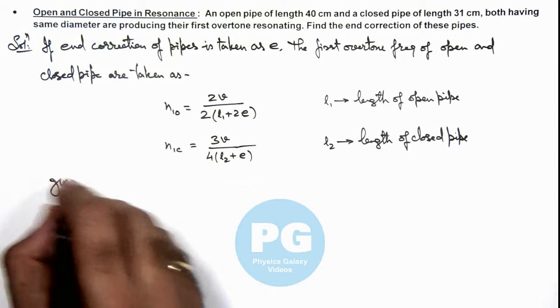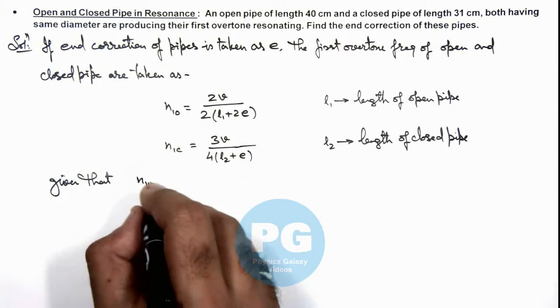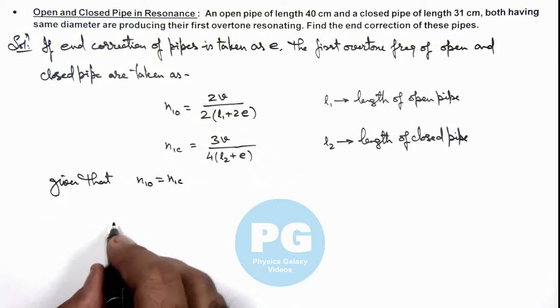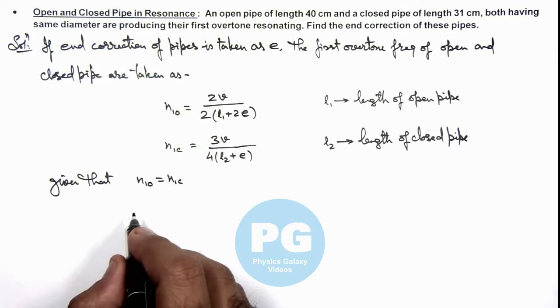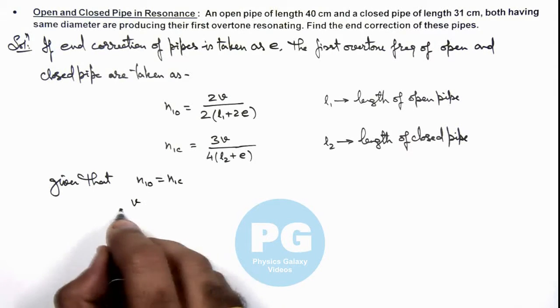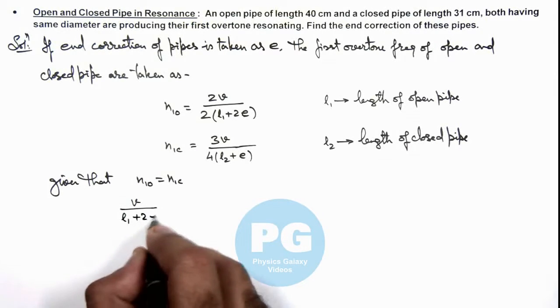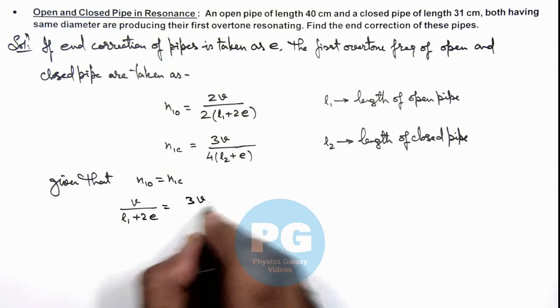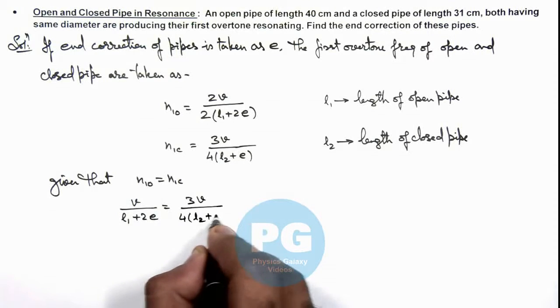We are given that n1o is equal to n1c. So if we equate the two, this will give us v by (L1 plus 2e) is equal to 3v by 4 times (L2 plus e).